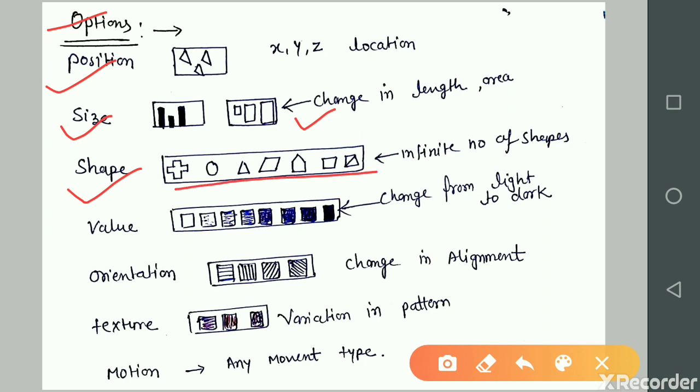Next is value. Value represents the gray level and different lighting conditions. In this representation, each box has different gray levels and color textures. You see this particular white box with dotted and lining, then color changes from light to dark condition. This is value.